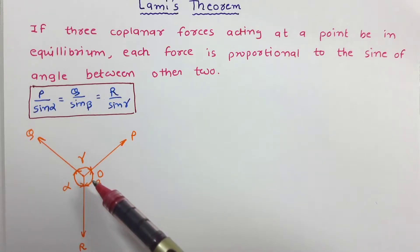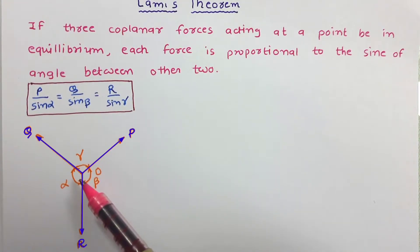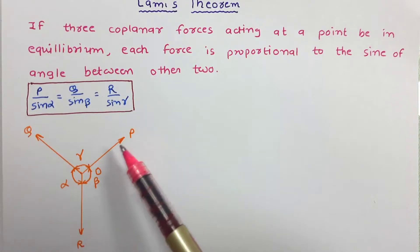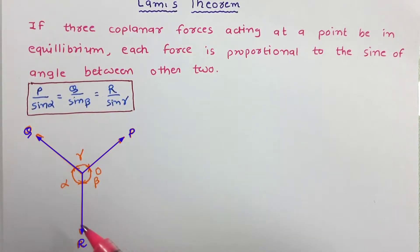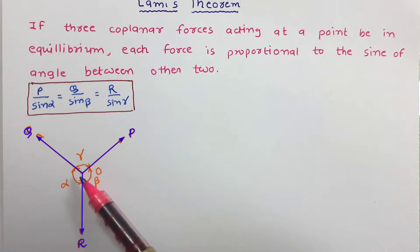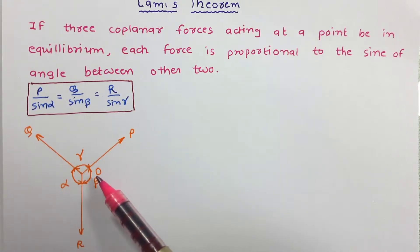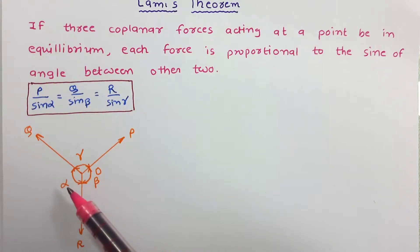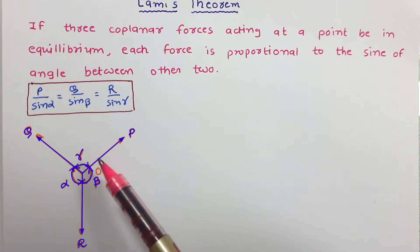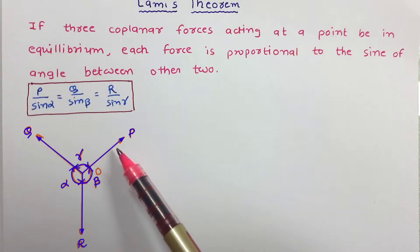This theorem is very useful for solving problems when three forces are there. Now let us try to prove this equation. So we will start with the figure. Here let us consider these three forces P, Q, and R, which are coplanar forces and acting at point O. Alpha, beta, and gamma are the opposite angle of P, Q, and R respectively.